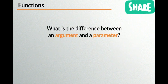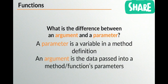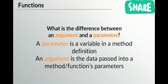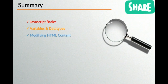What is the difference between an argument and a parameter? A parameter is a variable inside a method or function definition, whereas an argument is the data passed into a function's parameters. The argument is given to the function when it's called; the parameter is the variable used temporarily during the function. Quick summary of today's class: JavaScript basics, variables and data types and the differences between them, modifying HTML content using methods like getElementById or getElementsByTagName, and creating your own functions.